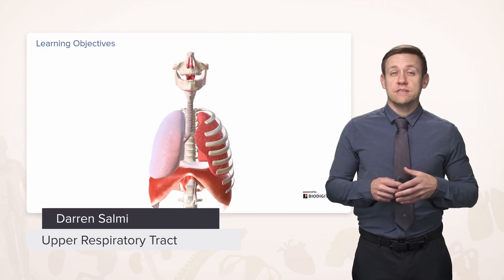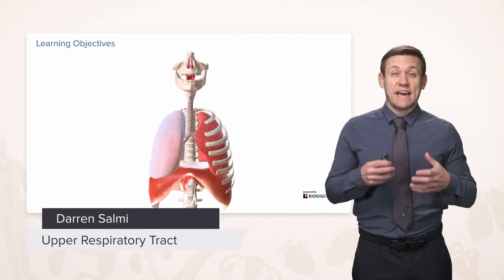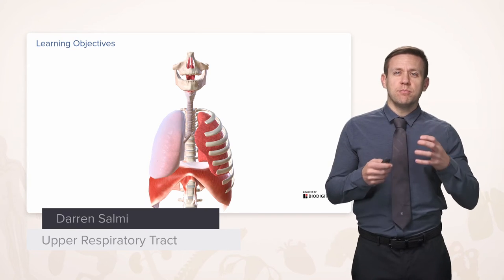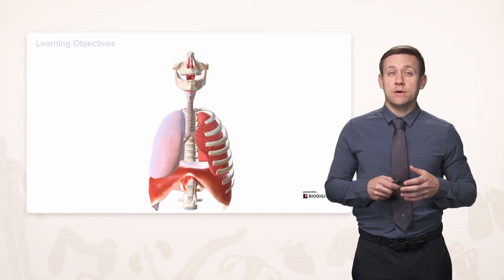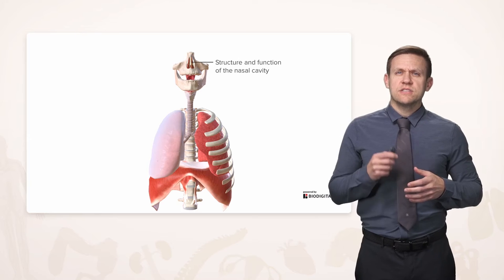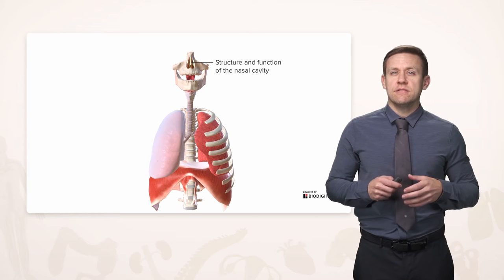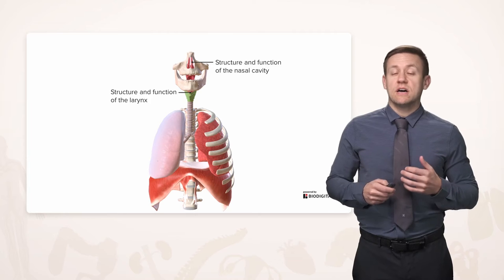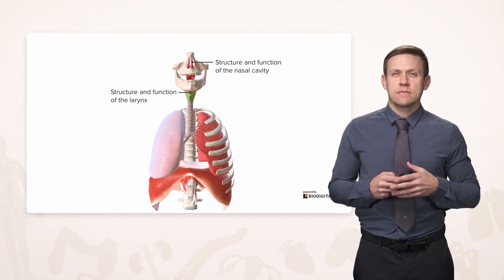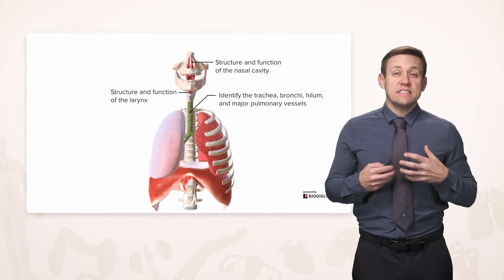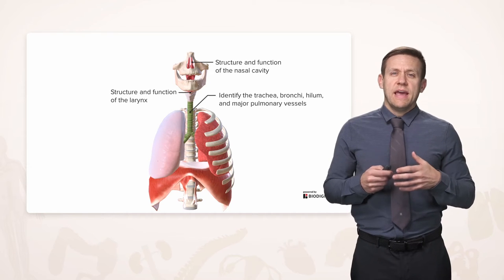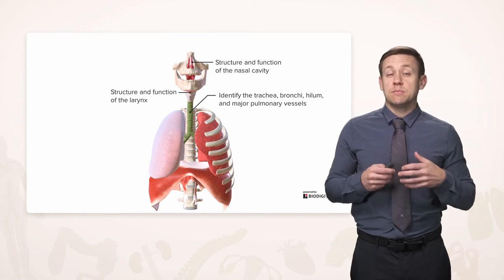We're going to talk about the respiratory system, whose goal ultimately is to achieve gas exchange with the blood. But there are many important structures that move and modify air before it gets to that point. We're going to start by talking about the structure and function of the nasal cavity, before moving deeper down to talk about the larynx. Then once we get into the chest cavity, we're going to be talking about the trachea, bronchi, something called the hilum, and the major blood vessels that supply the lung.